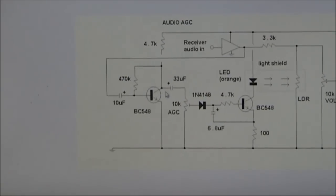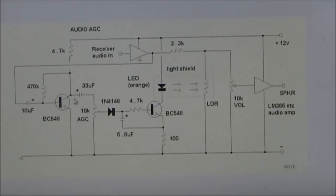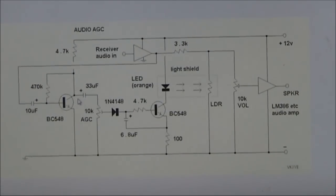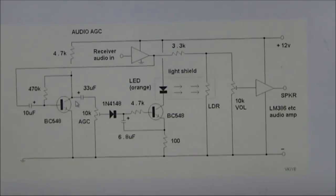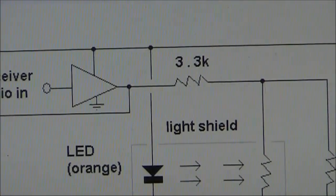The input of that amplifier is driven by the output of the previous audio amplifier just before the volume control. You can see the output just before the 3.3K resistor.